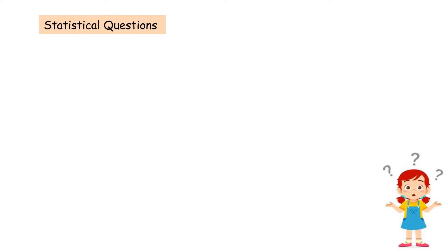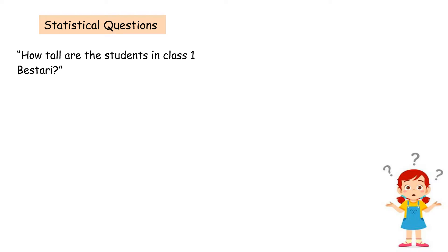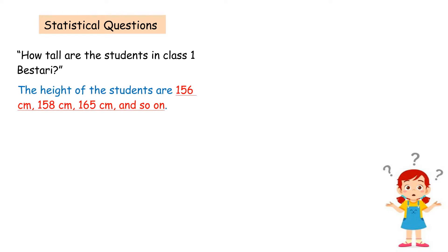A statistical question is one whose answer has variability. For example, how tall are the students in Class 1 Bestari? The heights of the students are 156 cm, 158 cm, 165 cm, and so on. There is variability in the height of the students.